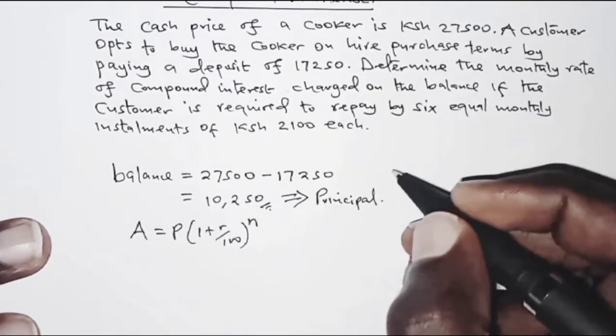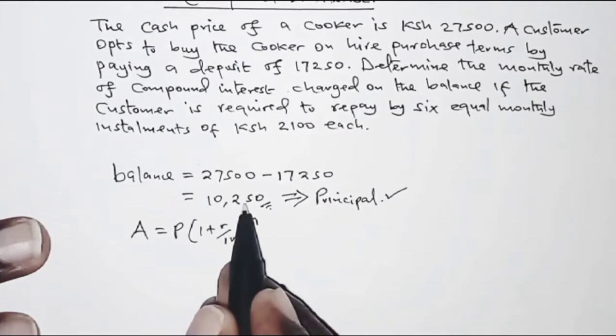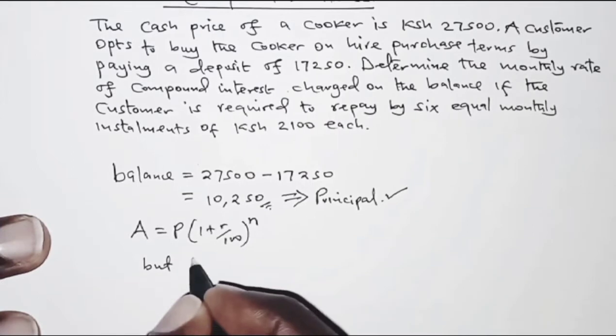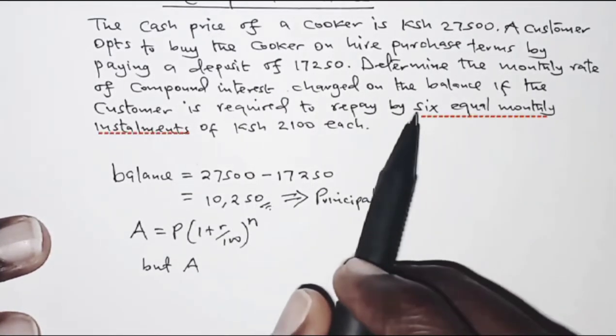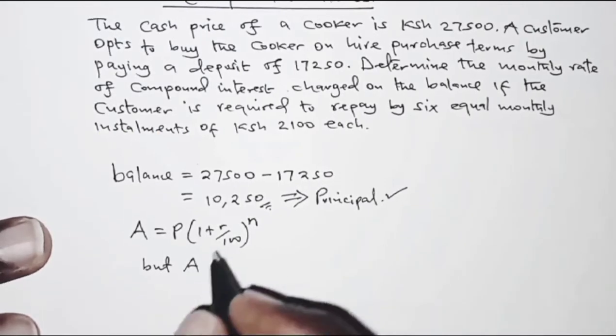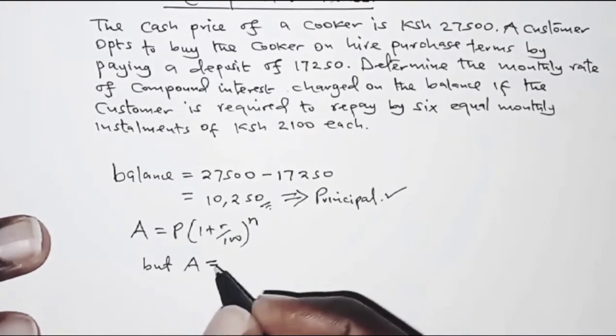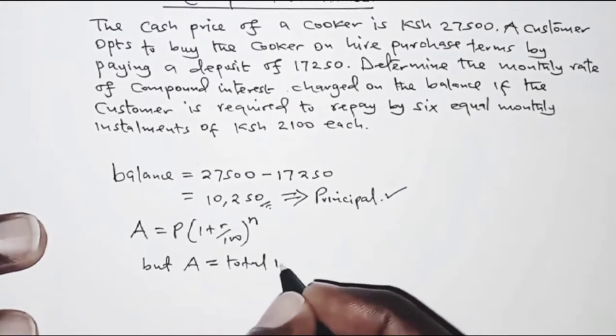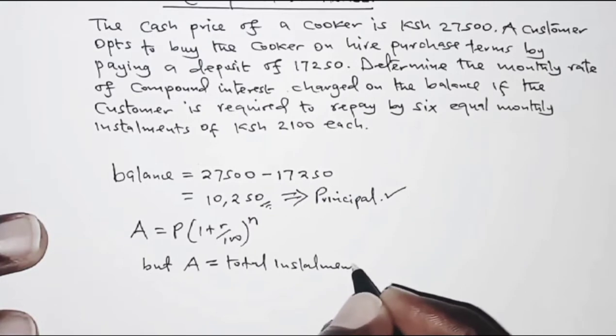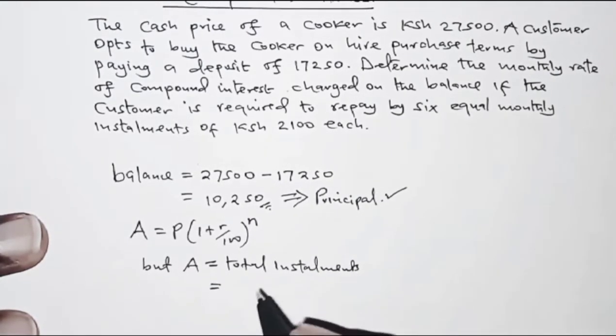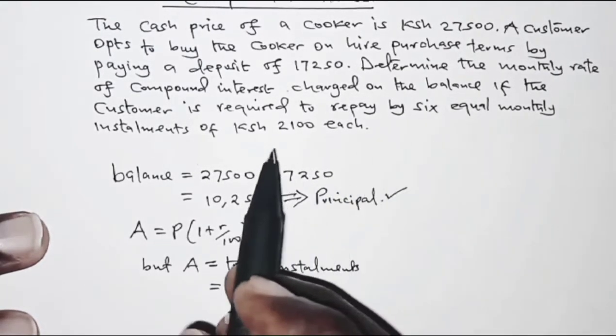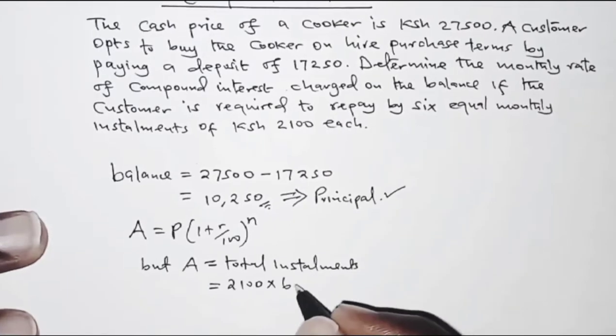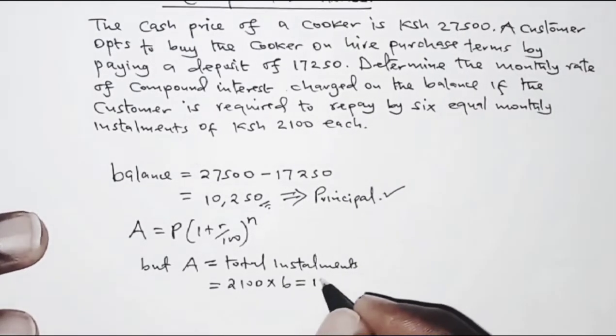So we already know that the principal P is 10,250, but the amount here is accrued in six equal monthly installments. So we're going to have the amount equivalent to the total installments. That is given by the amount for each installment which is 2,100 times the six installments. So that in total is 12,600.